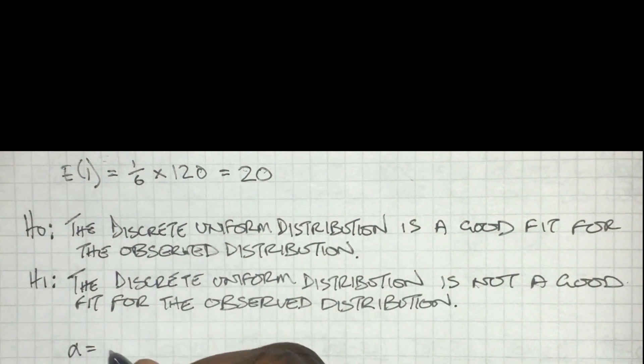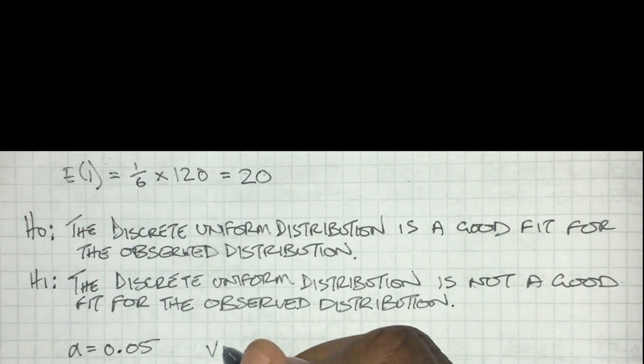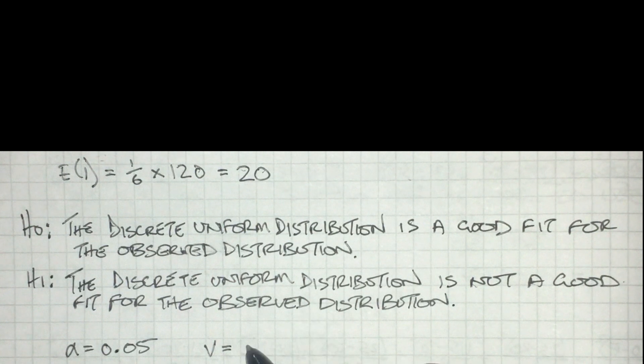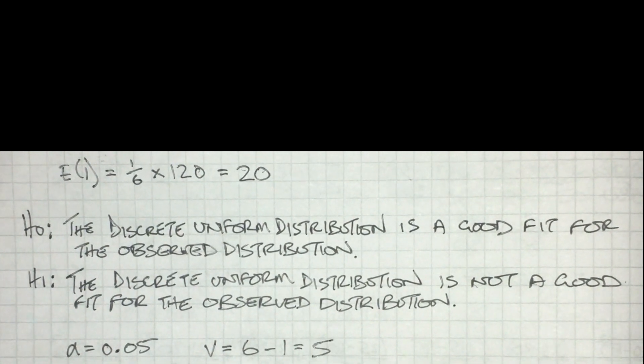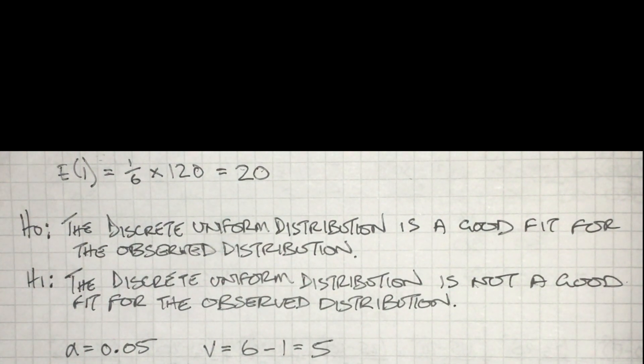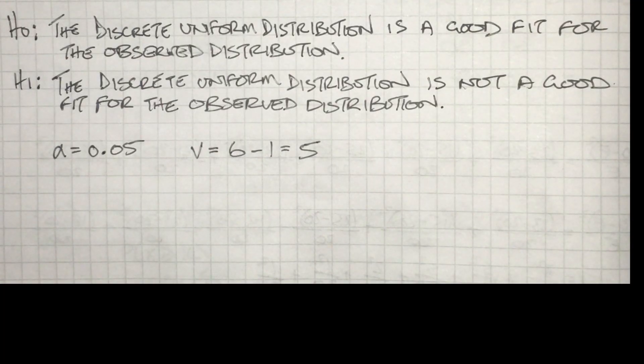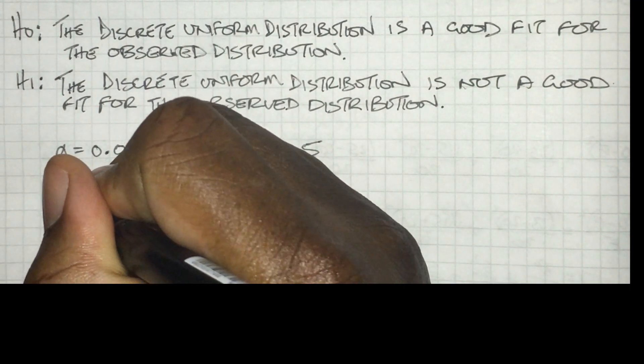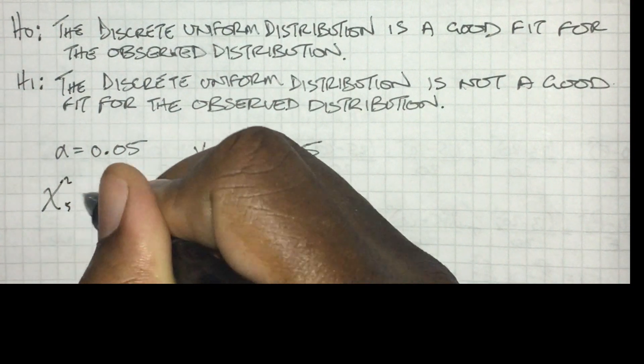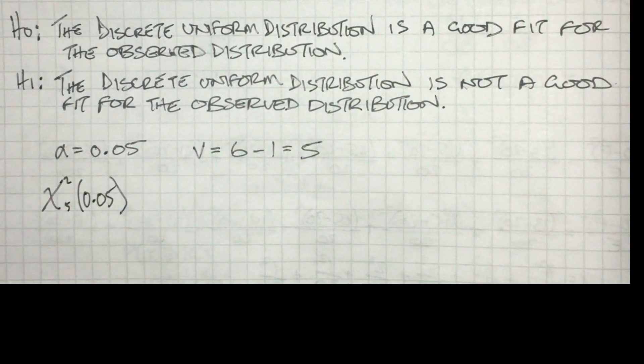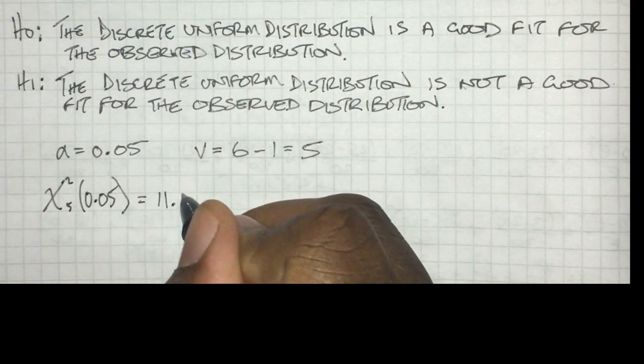Next I'm going to state the significance level. We're told in the question this is 5%, and I'm going to calculate my degrees of freedom: 6 minus 1 equals 5. I did have a quick check if all the expected values were larger than 5, and they were actually all 20, so instantly I know they're all suitable.